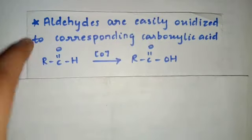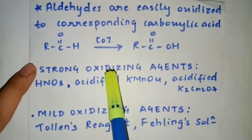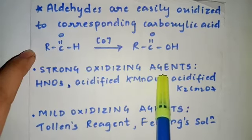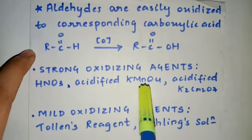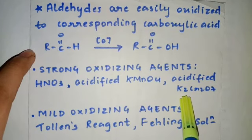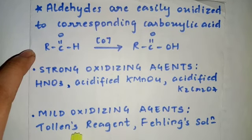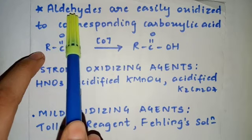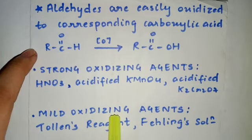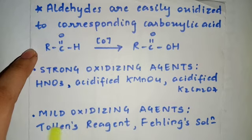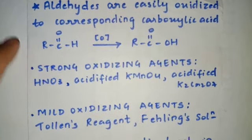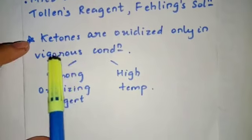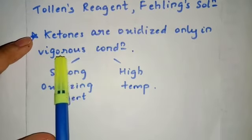Let me make it more clear. We have two types of oxidizing agents: strong oxidizing agents — for example, HNO₃, acidified KMnO₄, acidified K₂Cr₂O₇, etc. — and mild oxidizing agents, like Tollen's reagent and Fehling solution, which we will be seeing in this chapter ahead. Your aldehydes can be oxidized even by mild oxidizing agents, but your ketones cannot be oxidized by mild oxidizing agents.